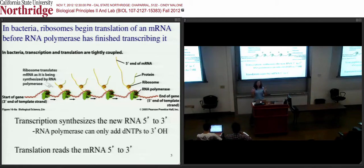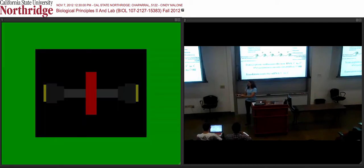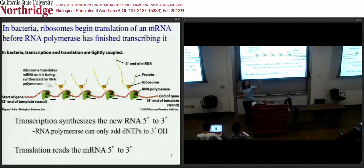And remember, transcription always travels in the 3 prime direction, can only add the 3 prime ends, uses that 3 prime OH to add the next nucleotide. The ribosome reads the mRNA from the 5 prime end to the 3 prime end. So you can think of it sort of marching down codon by codon, triplet by triplet, all the way down, starting at the 5 prime end, and then falling off at the 3 prime end.